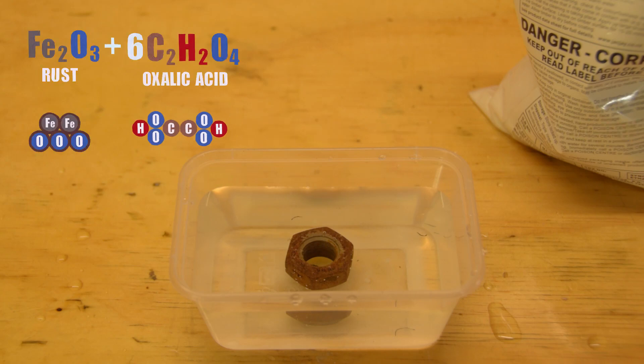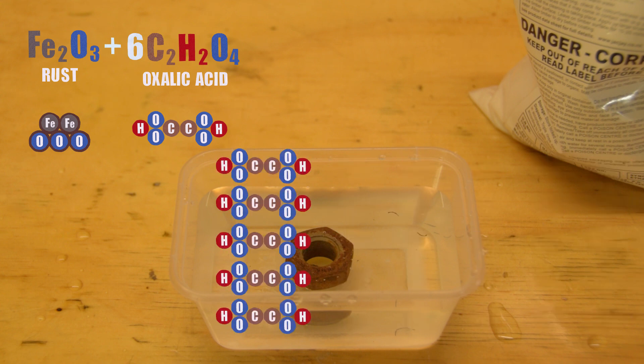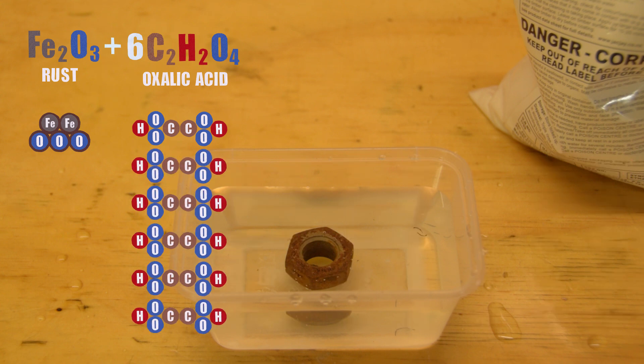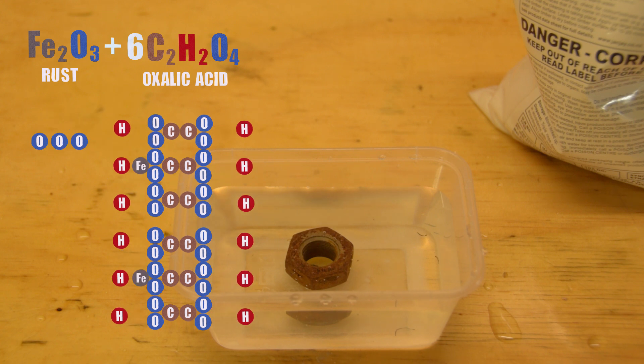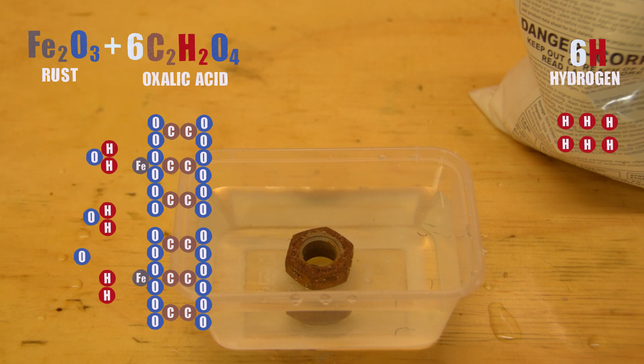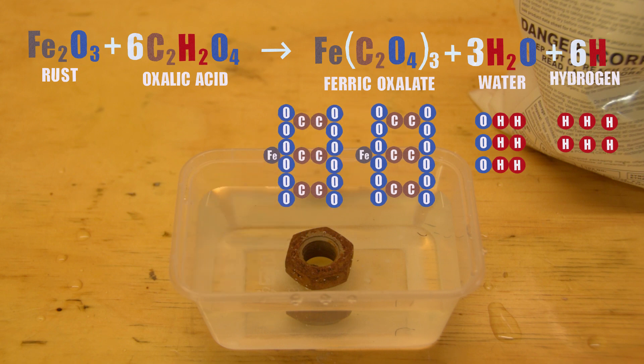Oxalic acid. Two hydrogens, two carbons and four oxygens. We need six oxalic acids for the reaction to balance. The iron is pulled out of the iron oxide and binds to the oxalic acid. The hydrogens team up with oxygen to form water. That leaves us with ferric oxalate. That's the yellow liquid.